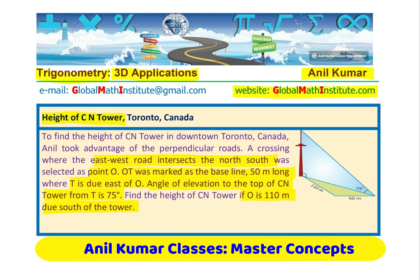While reading, I took note of some important information which I highlighted. Now let us scan and understand the given situation. Anil took advantage of perpendicular roads — that means roads are perpendicular, some going north-south and some east-west. That is common here in Toronto.